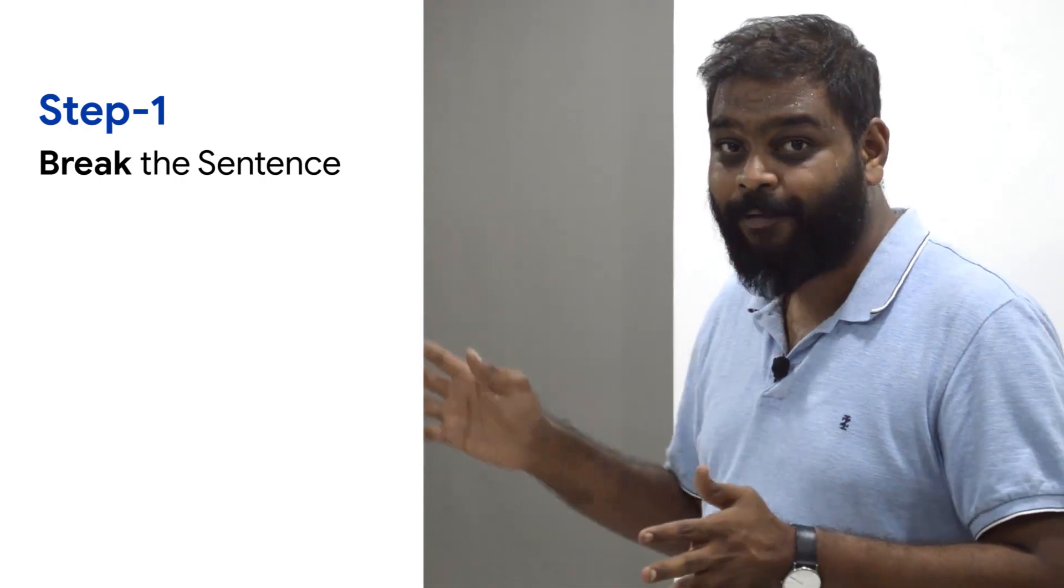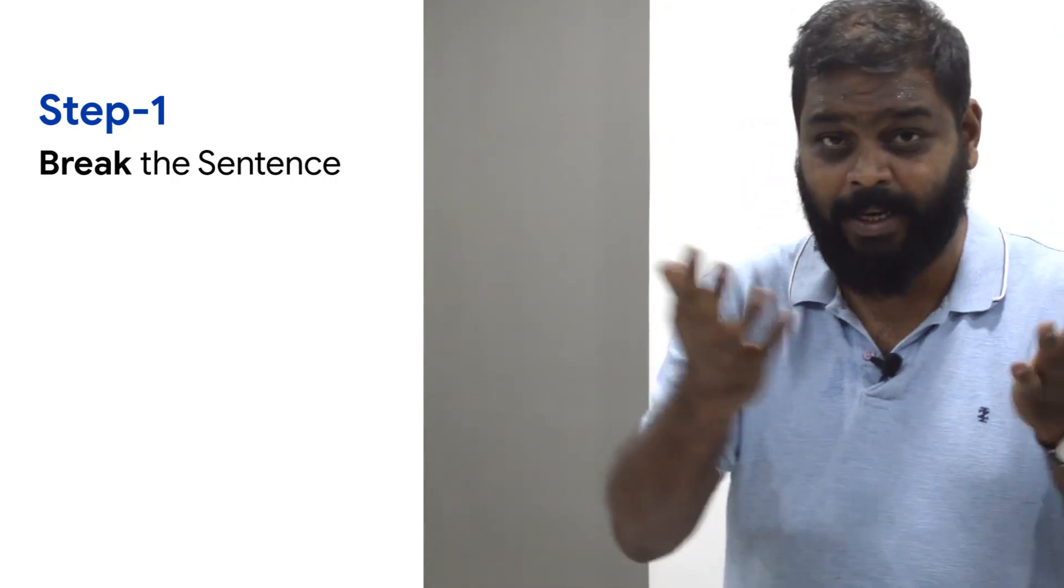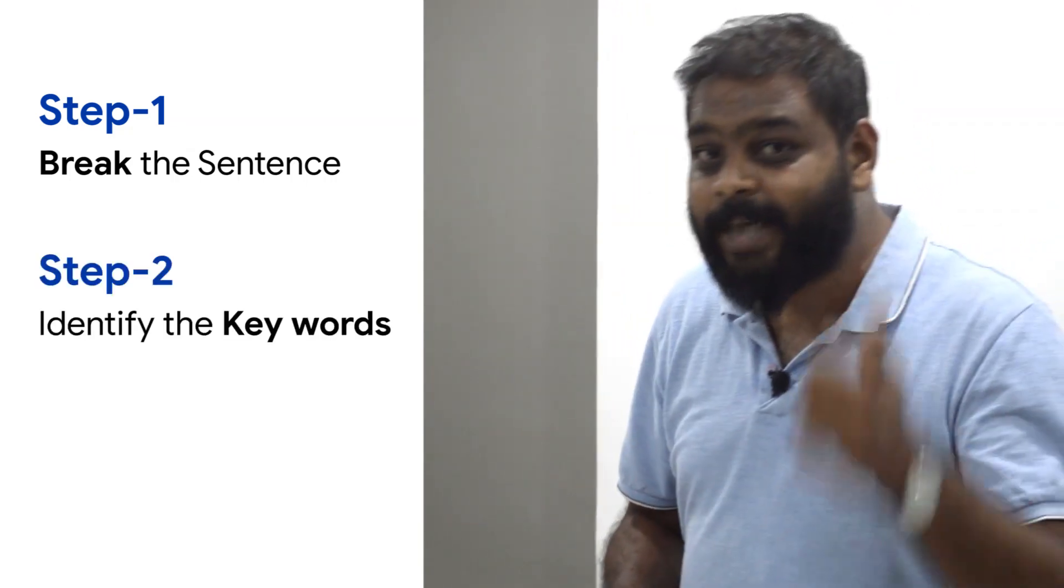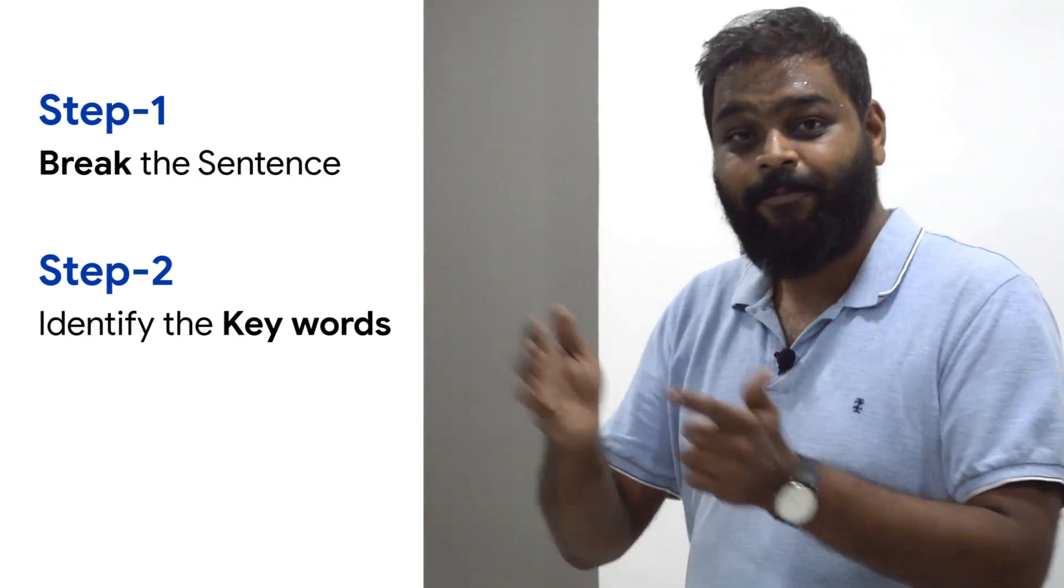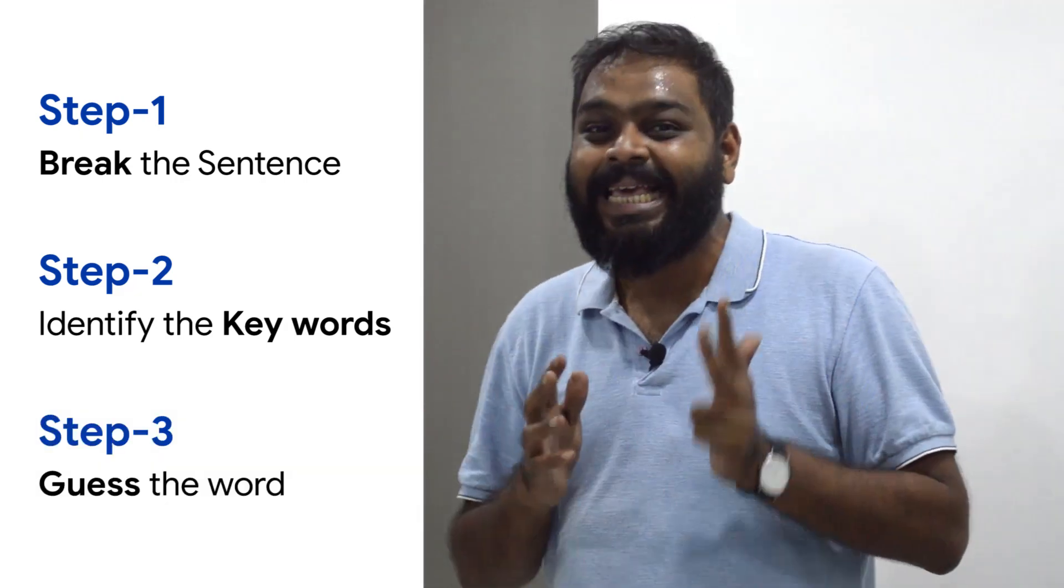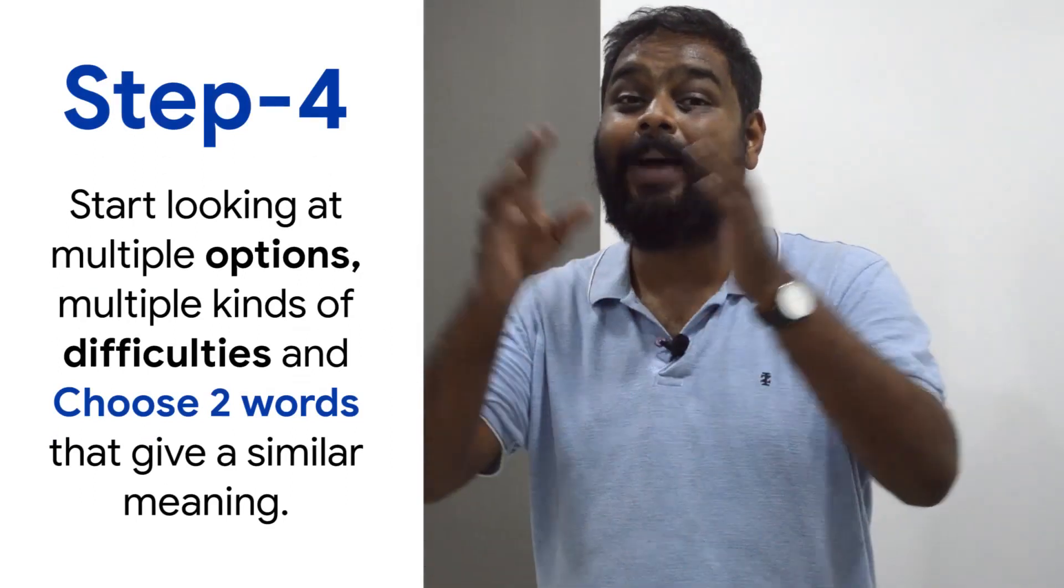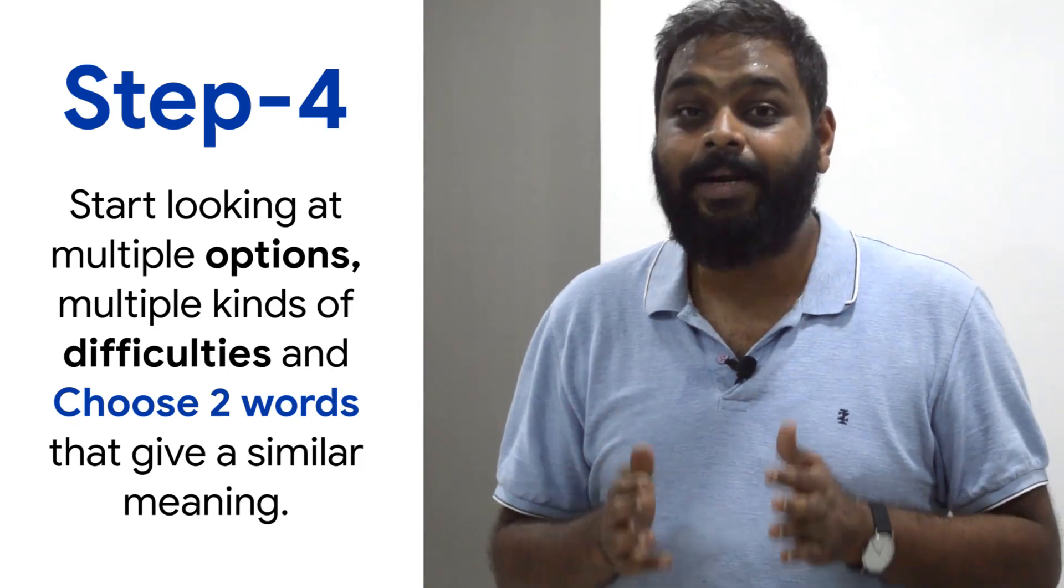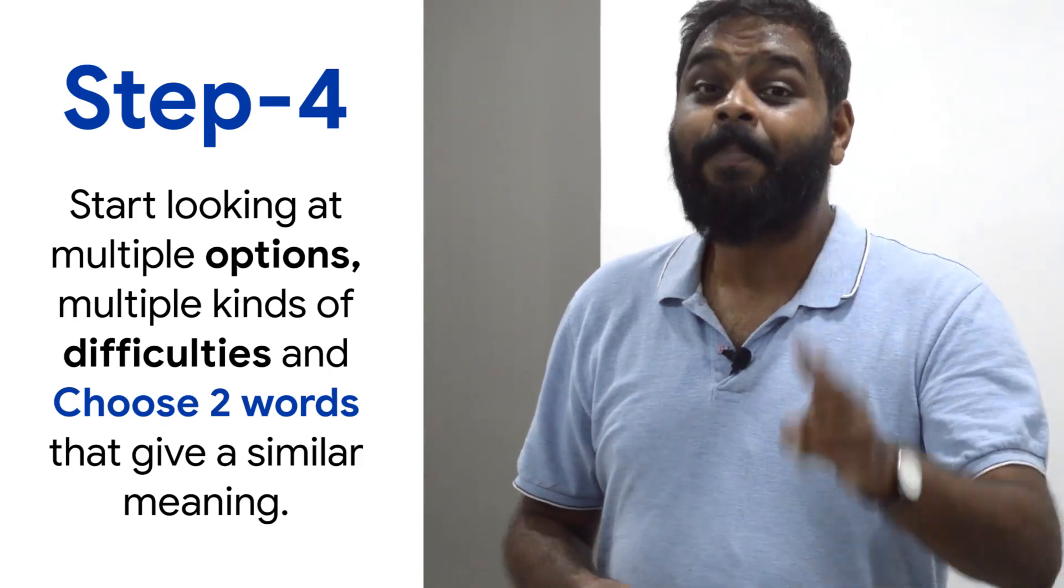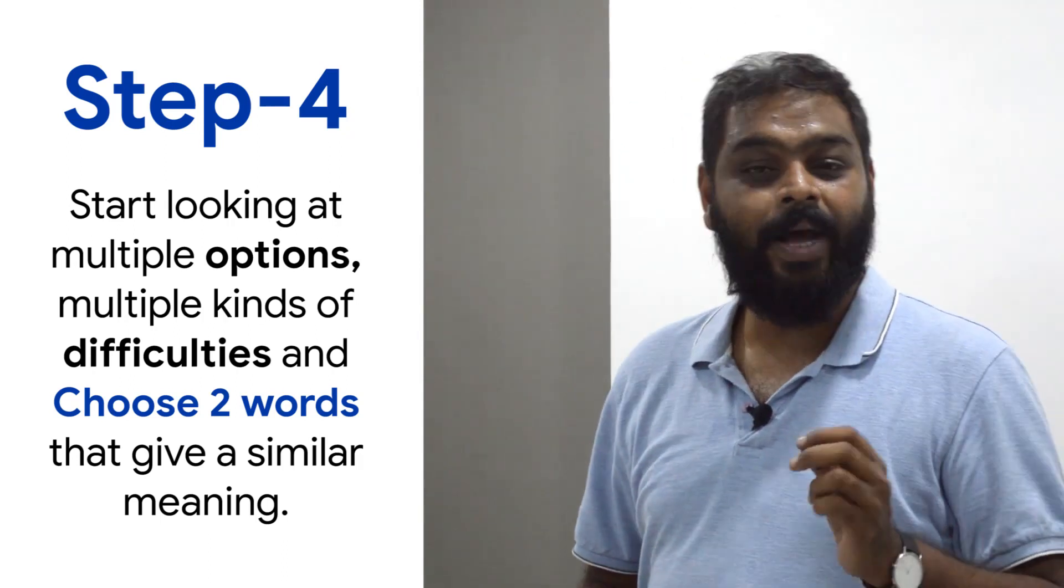So my step one, I have broken down the sentence into smaller fragments using logical connectors, sentence structures, punctuation marks. Step two, I identify the keywords and I try to figure out how the tone is changing from one fragment to another. Step three, I guess the word that can come into the blank. Step four is where I start looking at the options, the multiple kinds of difficulties that can actually come in, and I try to choose two words which need not always be synonyms but give me a similar meaning when put into the sentence.